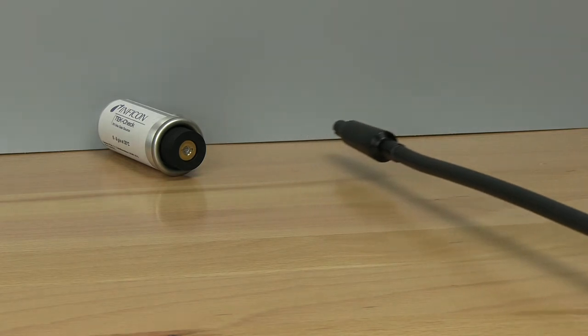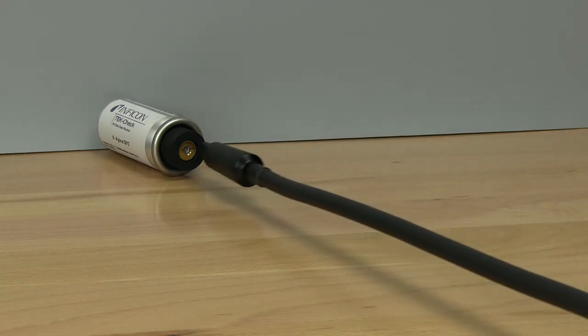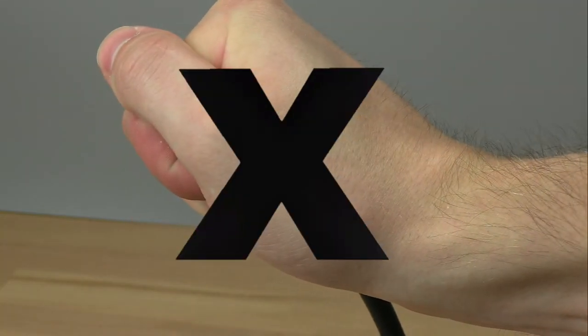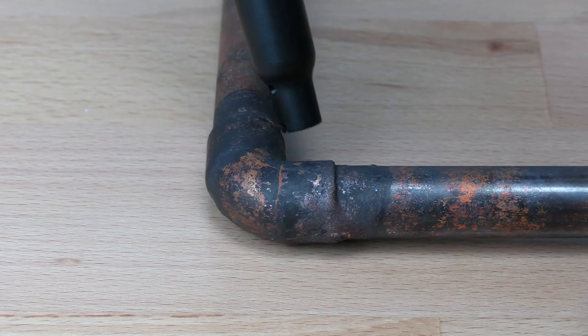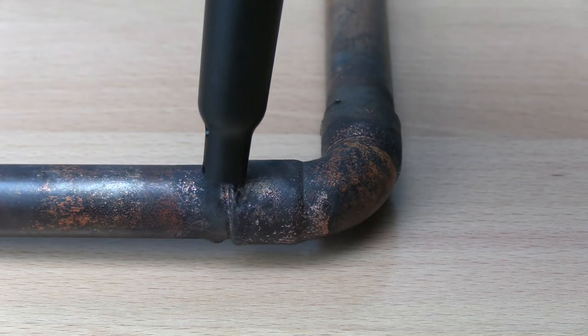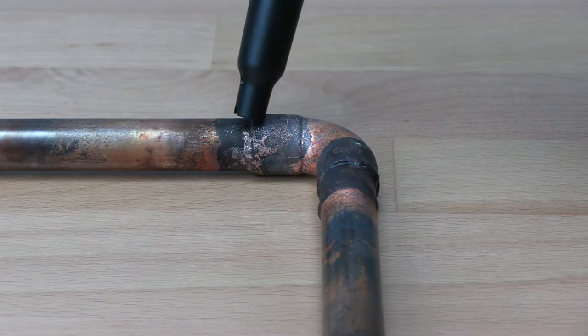Place the tip of DTEK3 as close as possible to the suspected leak. Be careful not to block the airflow as this can cause false alarms. Slowly move the probe past each possible leak point. If the leak is detected, DTEK3 will alarm and the leak indicators will illuminate.